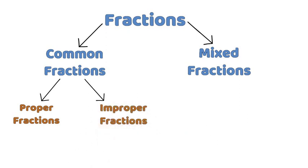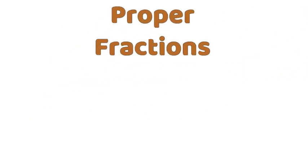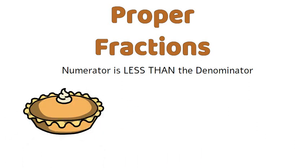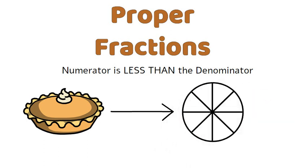Let's work through each type of common fraction in more detail. A proper fraction is one where the numerator is less than the denominator. As we can see here, the pie has been divided into 8 pieces. If I select 3 pieces, then the fraction that I took is 3 eighths, or 3 over 8.